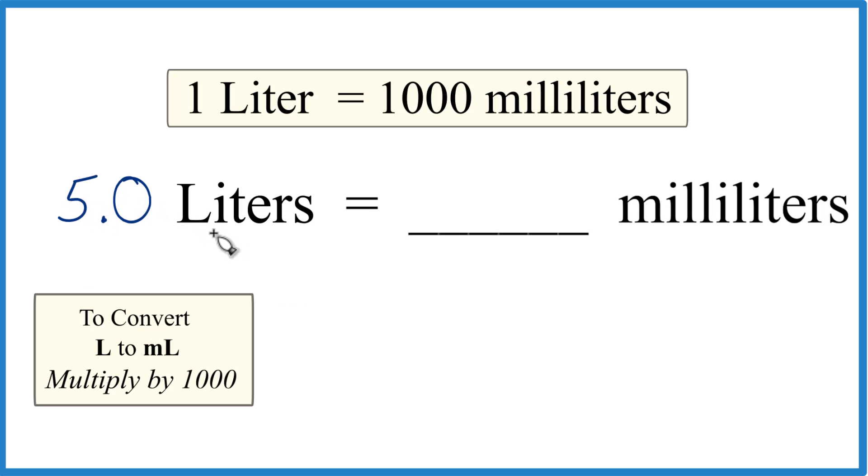So to get from 5 liters to milliliters, we would just take 5 times 1,000, which equals 5,000 milliliters.